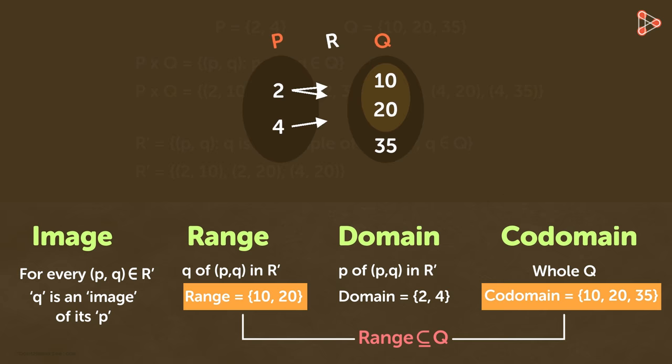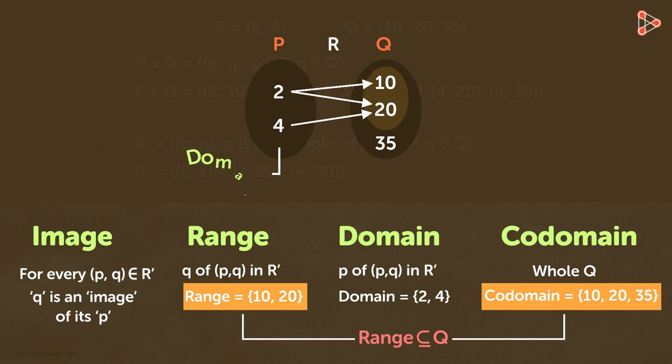Here is an arrow diagram to learn what is domain, range and co-domain. So this is the domain, this is the range and this is the co-domain for our relation R. Good luck here!